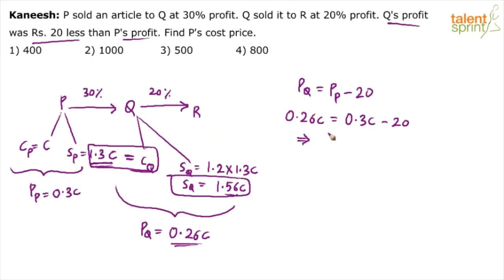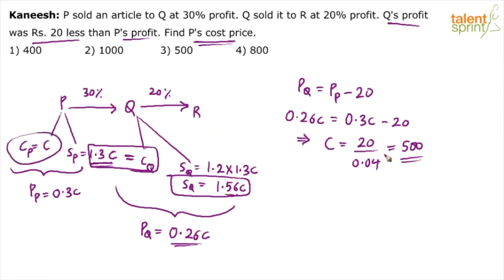0.04C = 20, so C = 20 / 0.04 = 500. P's cost price is 500. The question may ask for other values too: P's selling price is 1.3C = 1.3 × 500; Q's cost price is also 1.3 × 500; Q's selling price is 1.56 × 500, and so on.